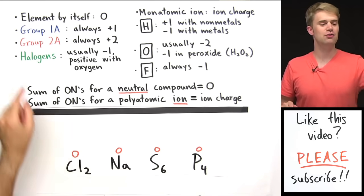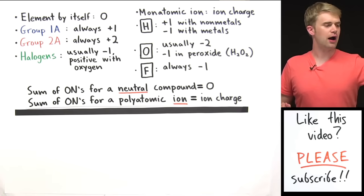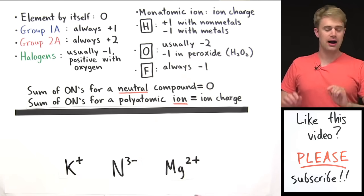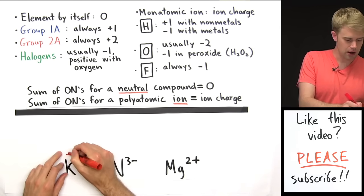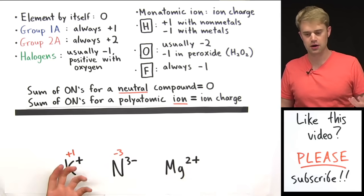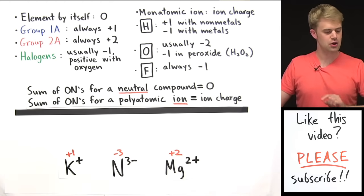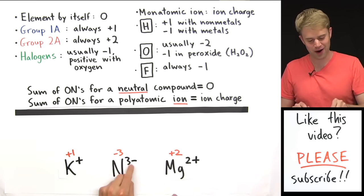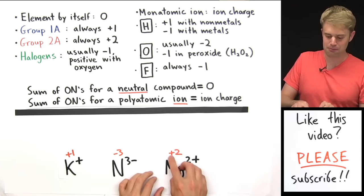The other rule is about monatomic ions — these are ions that are made of only one atom. For monatomic ions, their oxidation number is the same as their ion charge. So for K+, its oxidation number is going to be plus one. For N3-, it'll have an oxidation number of minus three, and Mg2+ is going to have an oxidation number of plus two. When we write oxidation numbers, we write the sign first — plus or minus — and then the number after. This is the opposite of how we write ionic charges, so just keep that in mind.